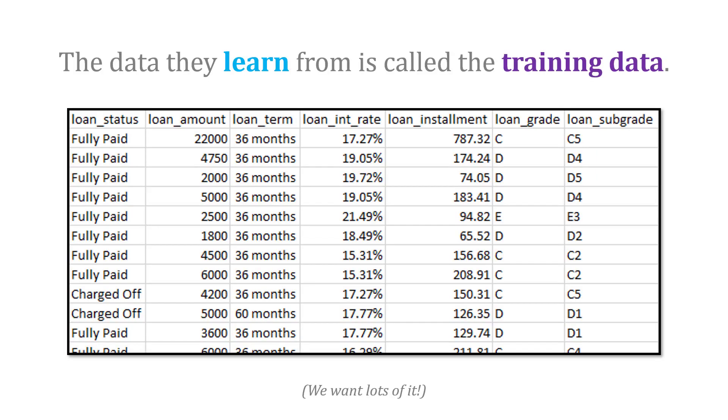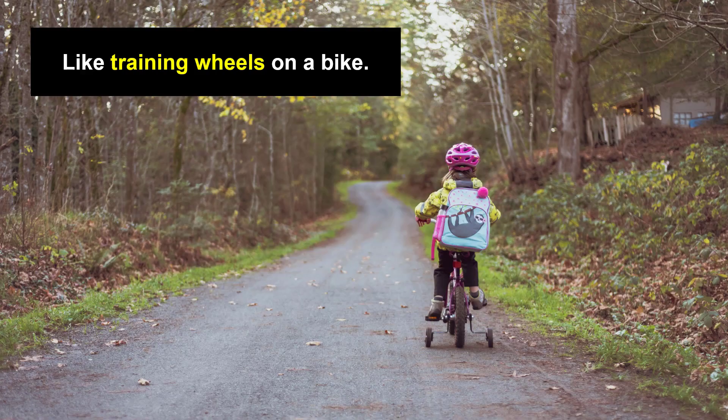The data the computer learns from is called the training data, and ideally we'd like to have lots of it. You can think of this process like training wheels on a bike — you have those training wheels on while you're learning to ride, you practice, and then when you're ready you take them off and ride on your own. These computers learn from that training data and then try to carry out the task based on what they learned.